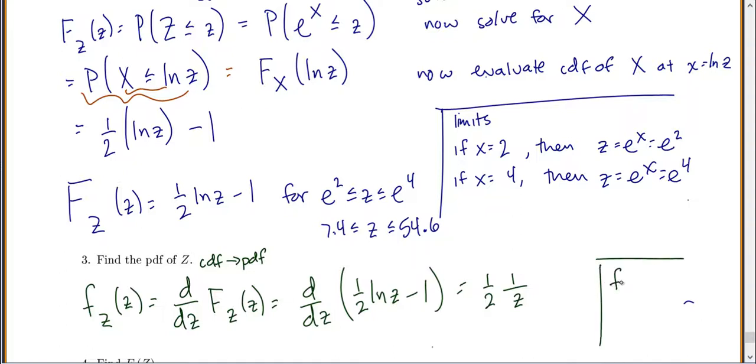So our answer here is that our PDF for z is equal to 1 over 2z for, once again, z is between e to the 2 and e to the 4.